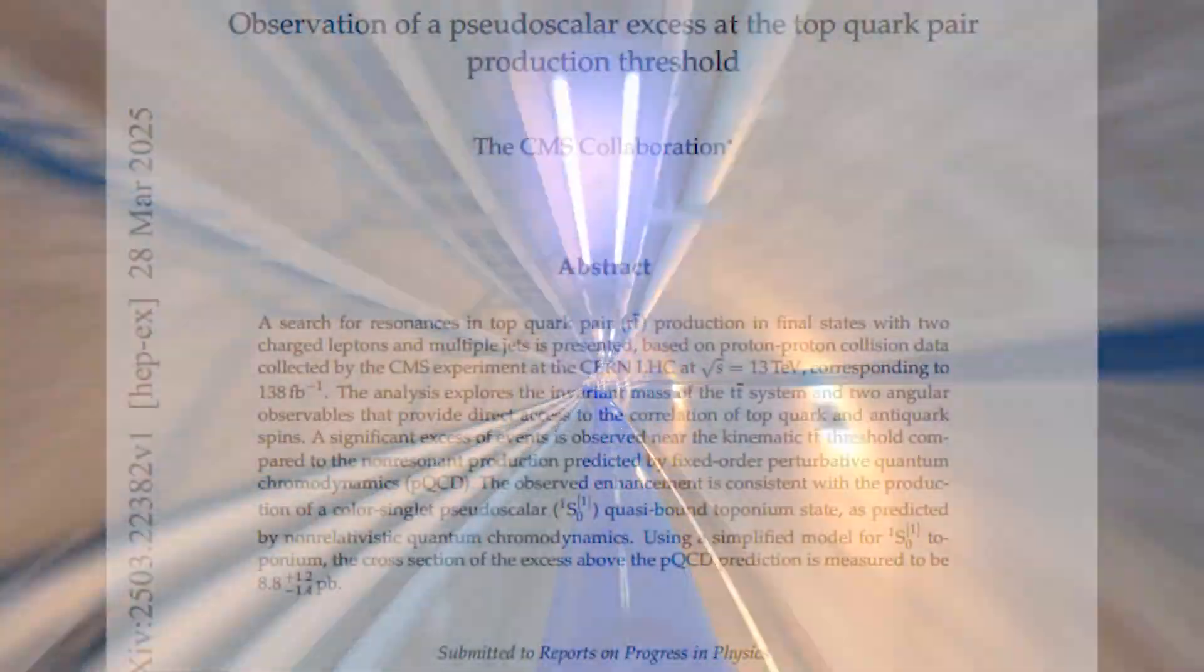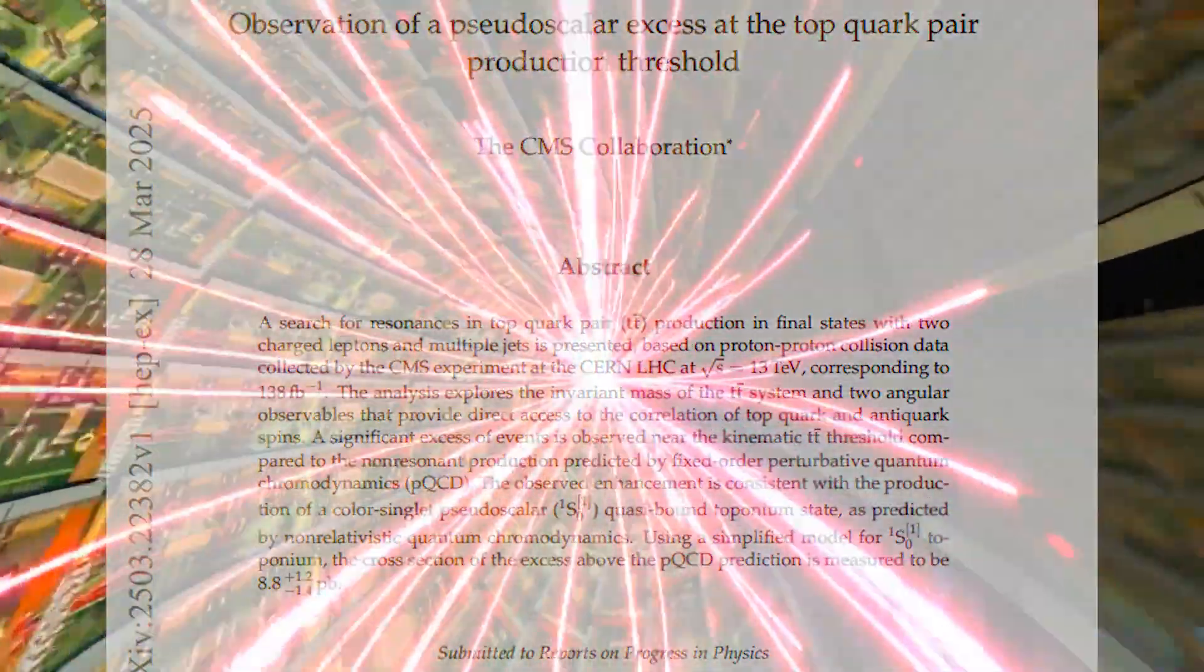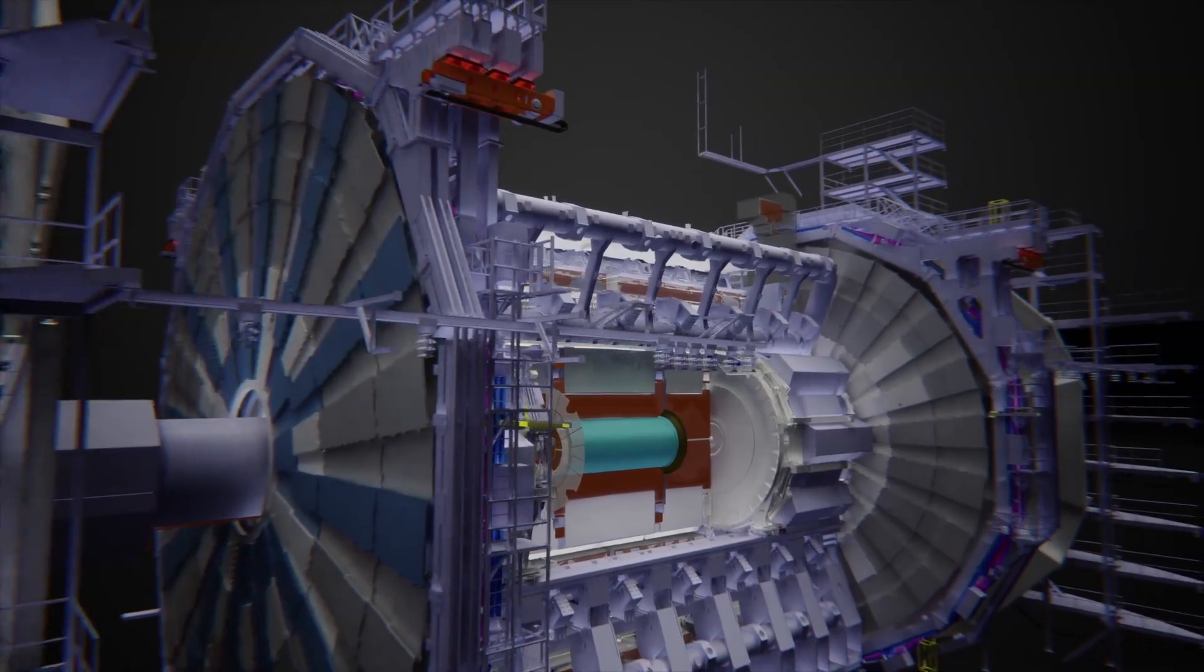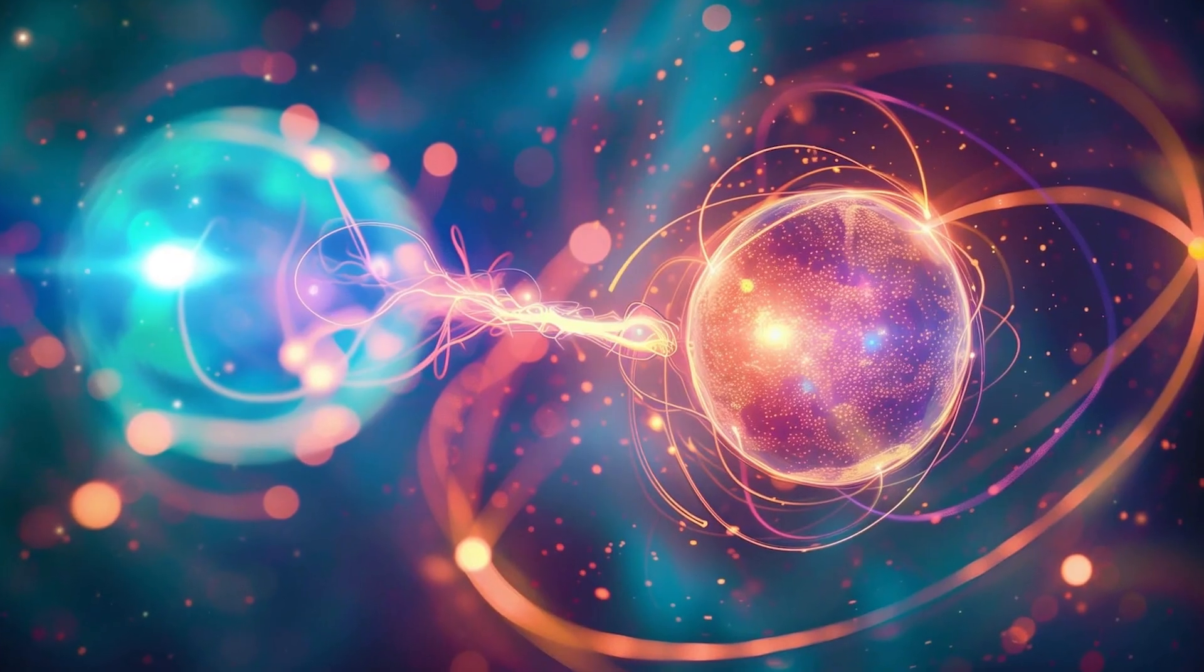A statistically significant bump in the data above the magical five sigma threshold, meaning there's less than one in three and a half million chance it was due to random noise. Toponium was real.